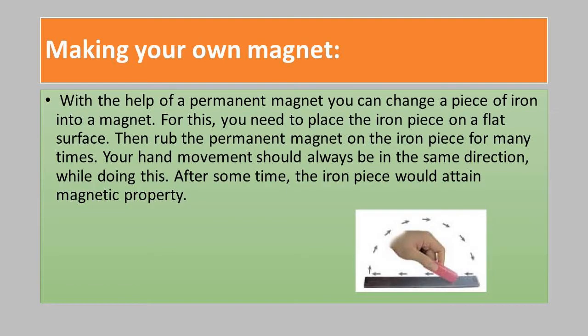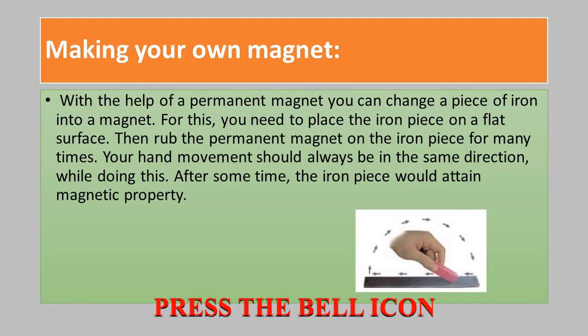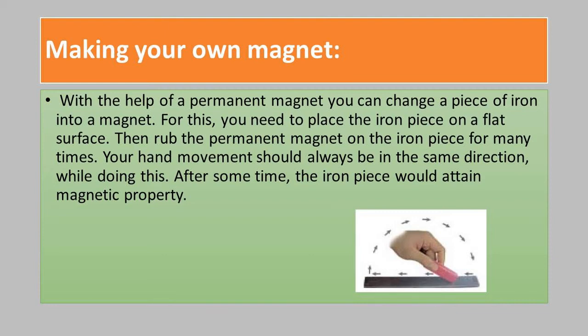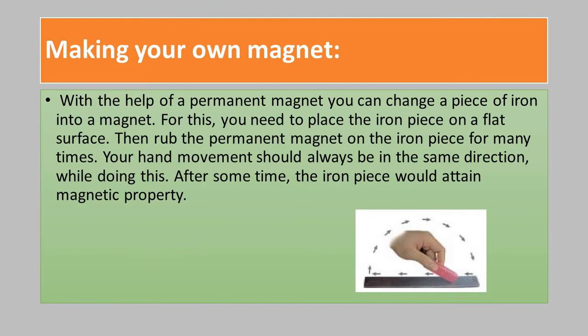You can even make a magnet at your home. With the help of a permanent magnet, you can change a piece of iron into a magnet. For this, you need to place the iron piece on a flat surface. Then rub the permanent magnet on the iron piece many times. Your hand movement should always be in the same direction while doing this. After some time, the iron piece will attain magnetic property.